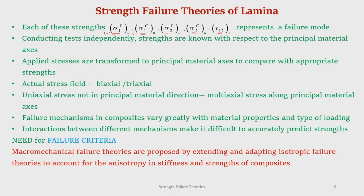As we have discussed, we can actually conduct tests independently and the strengths can be known with respect to the principal material direction: sigma_1Tu, sigma_1Cu, sigma_2Tu, sigma_2Cu, and tau_12u. What is done is the applied stresses are actually transformed to the principal material axis and then compared to the appropriate strengths. Suppose you have a lamina subjected to some stress state. We find out what is the stress in the principal material direction 1, the stress in direction 2, and the shear stress in the material plane 1-2, and then compare them with the corresponding strengths to assess whether it is safe or fails.